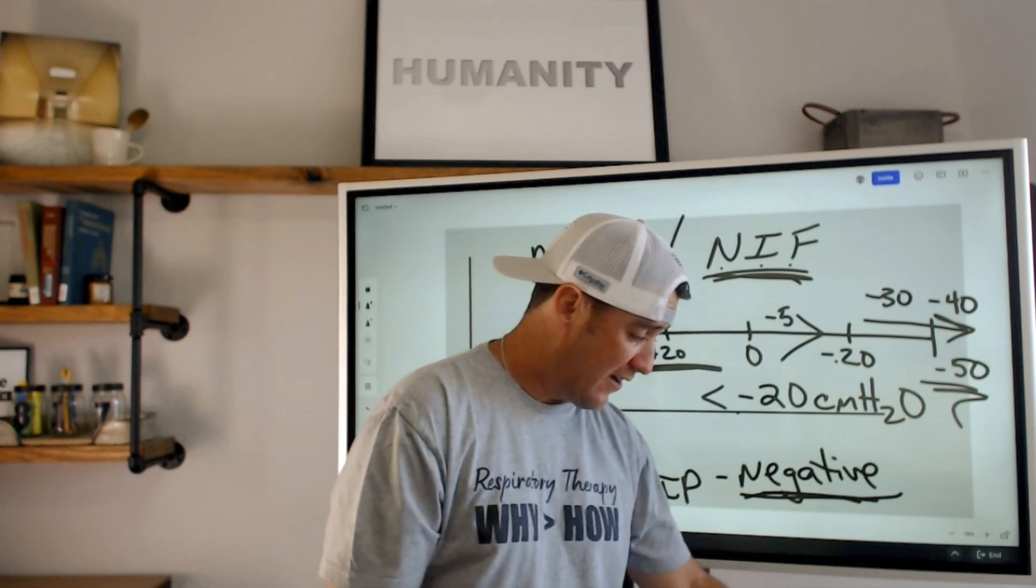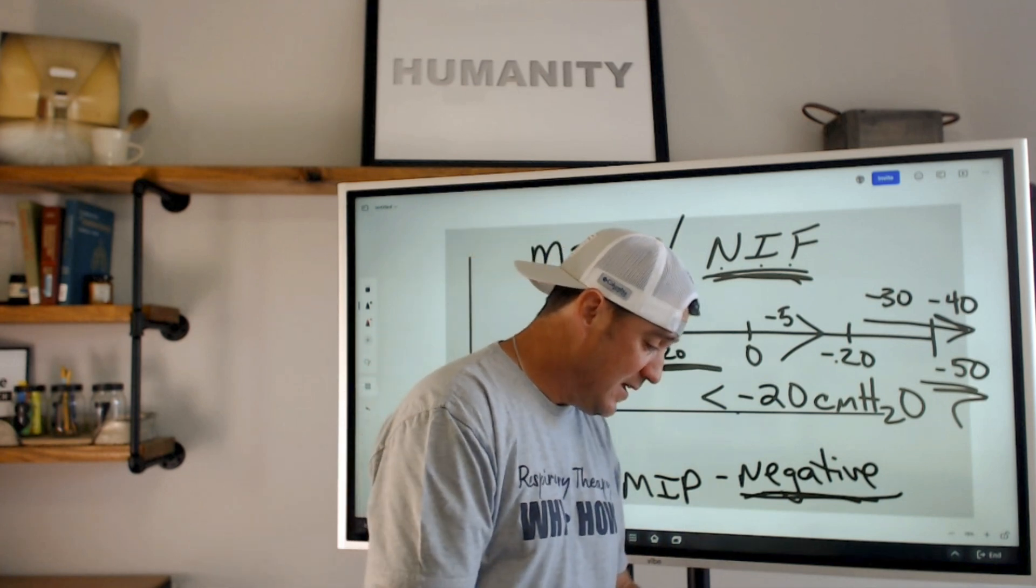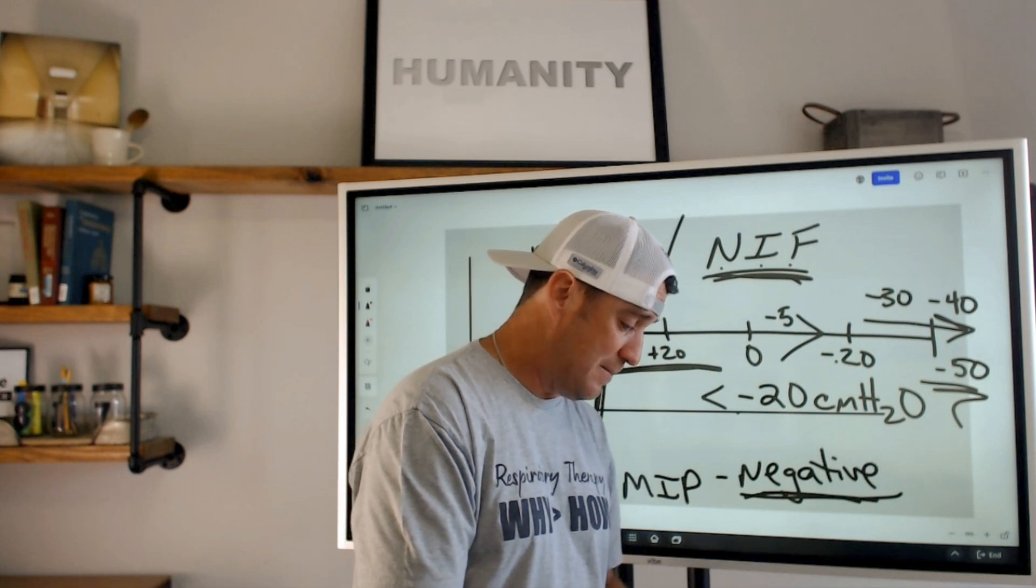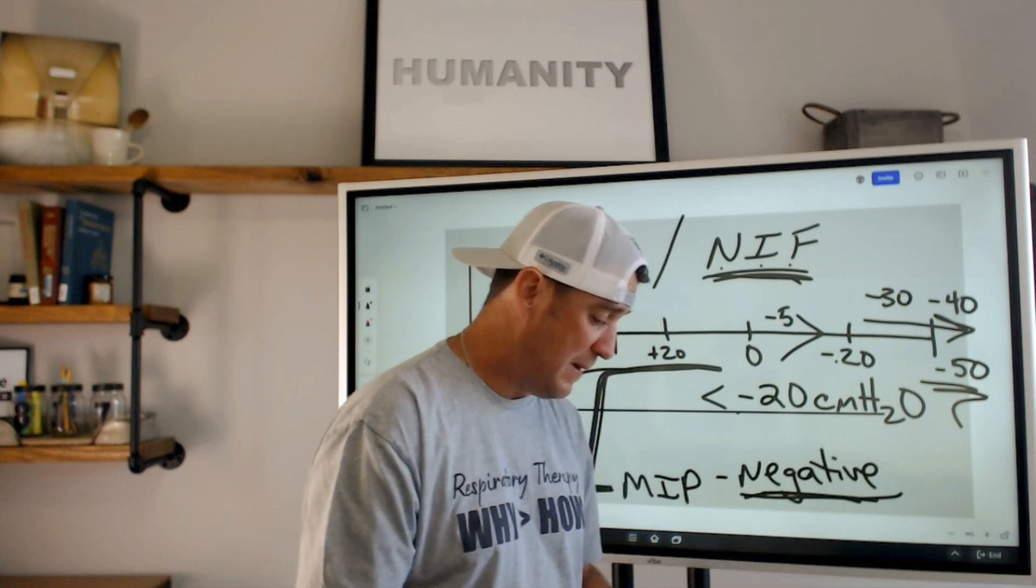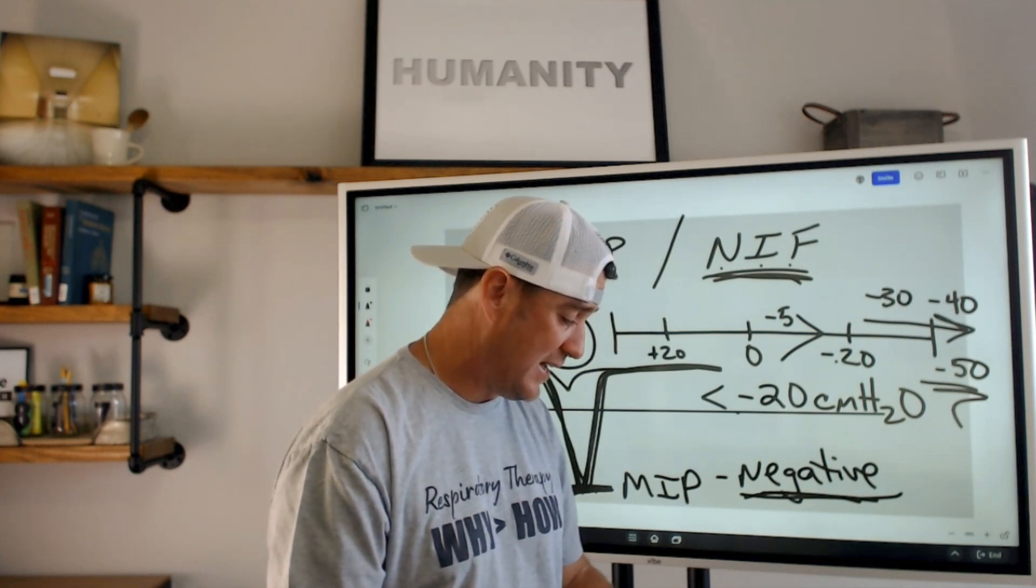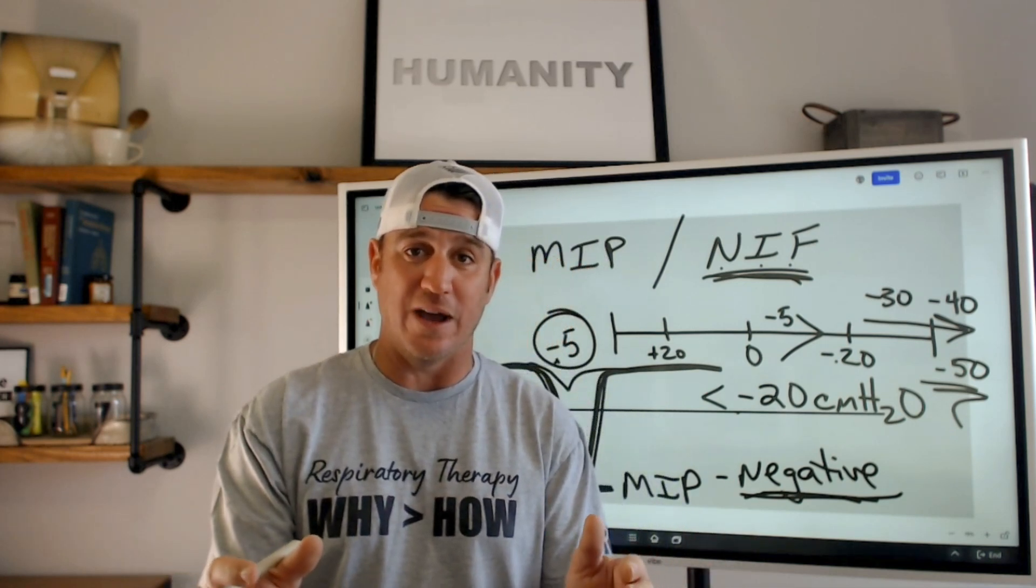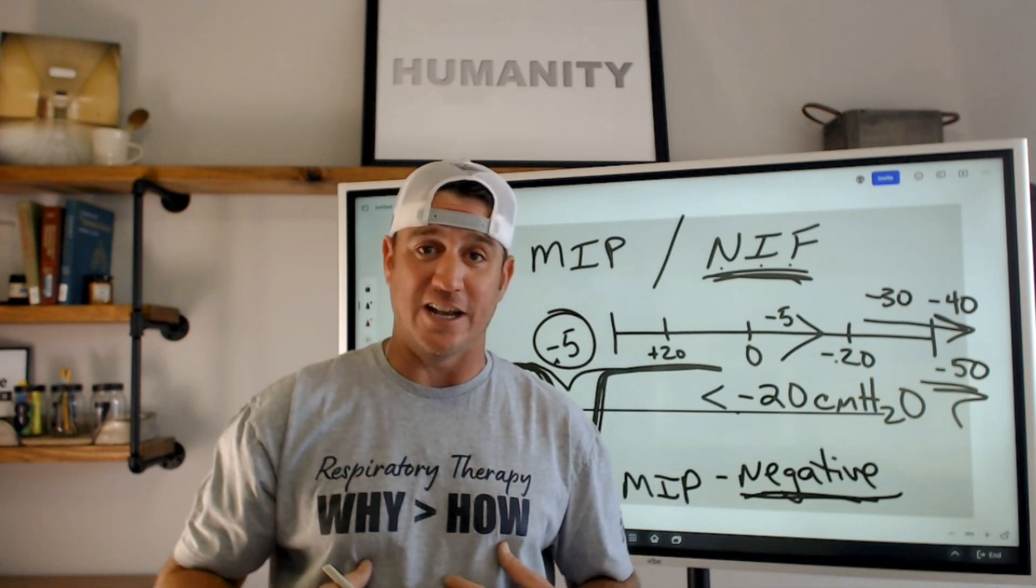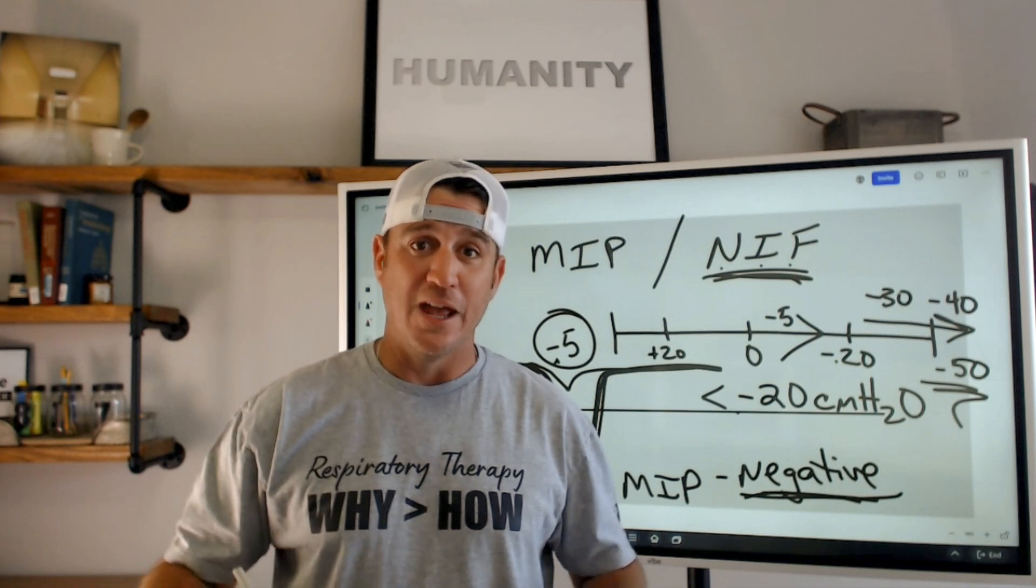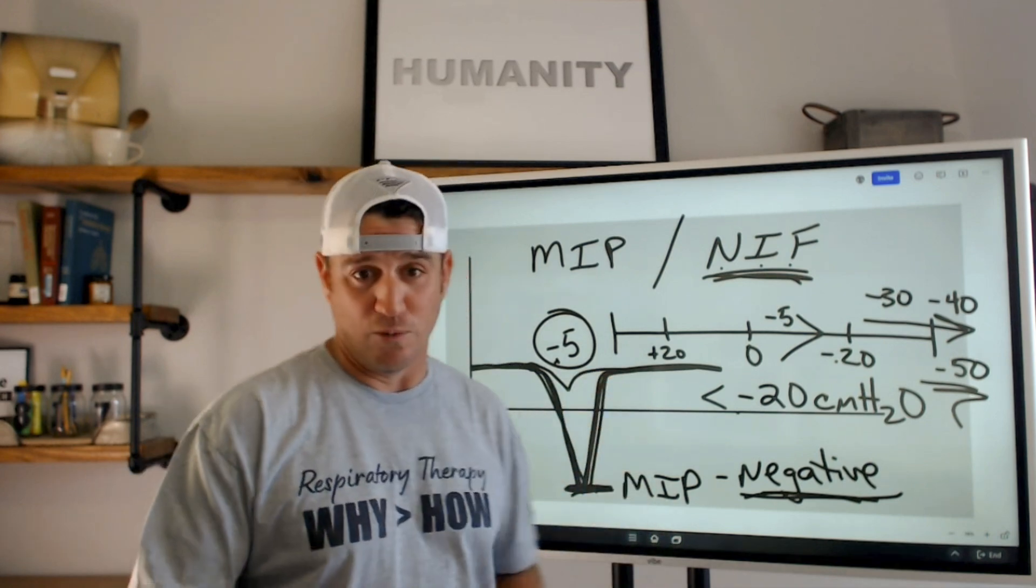I want to read this to you out of page 1166 of Egan's. This is the 12th edition. It says, MIP is a more specific measure than vital capacity. MIP provides information based solely on maximum output of the inspiratory muscles. A maximum stimulus is provided by total occlusion of the airway. When you totally occlude the airway and you have that patient suck in and taking a big deep breath, that diaphragm is going to drop. It's going to generate a negative pressure. The stronger those muscles are and the more effort they give you, the more negative that number will be.